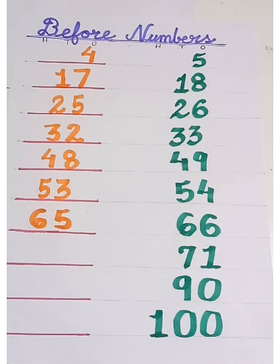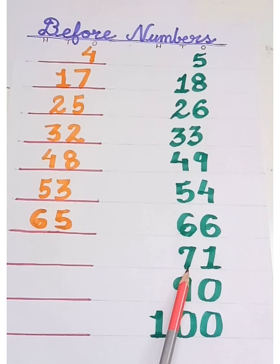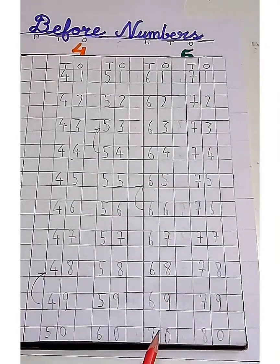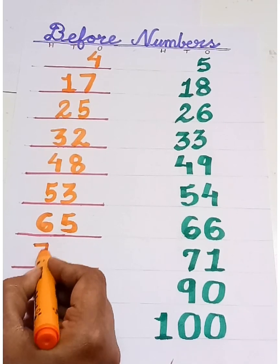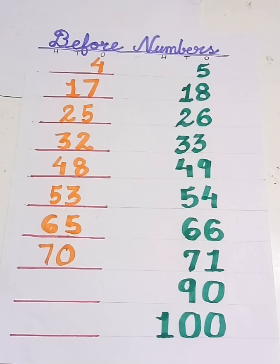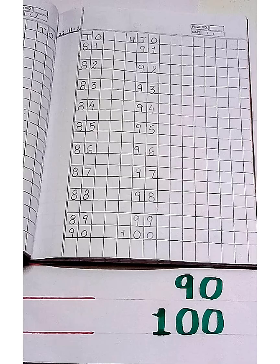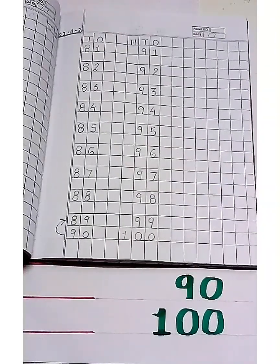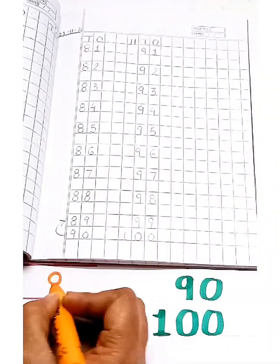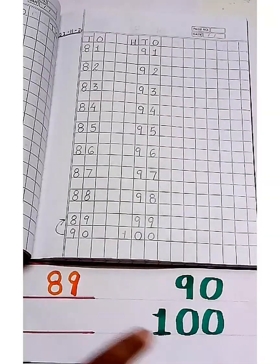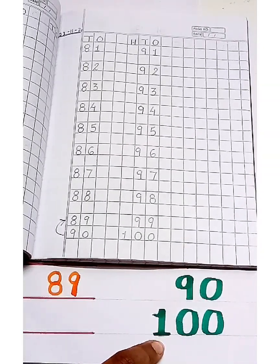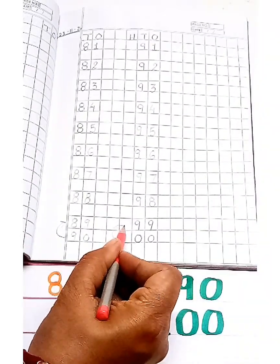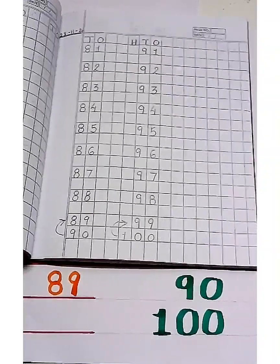Now tell me children, what comes before seventy-one? Let's count backward from seventy-one. Seventy-one and then seventy. Let's write seventy. What comes before ninety? Let's count backward from ninety. Ninety and then eighty-nine. Let's write eighty-nine. What comes before one hundred? Let's count backward from one hundred. One hundred and then ninety-nine. Let's write ninety-nine.